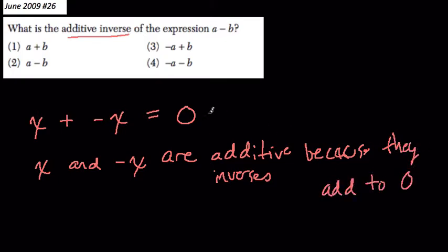And the idea is that if you have two things that add up to zero, they must be additive inverses of each other.